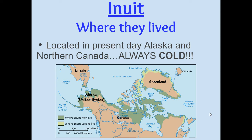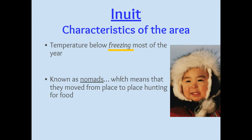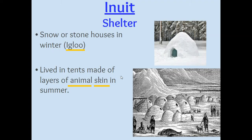The Inuit tribe is up in Alaska and northern Canada. It's very, very cold up there — they're pretty close to the North Pole and they're on the Arctic Ocean. Arctic means cold. They have temperatures and a climate that is below freezing most of the year. Because of that, they have access to lots of snow, which means that their shelter is going to be igloos made of snow and ice.